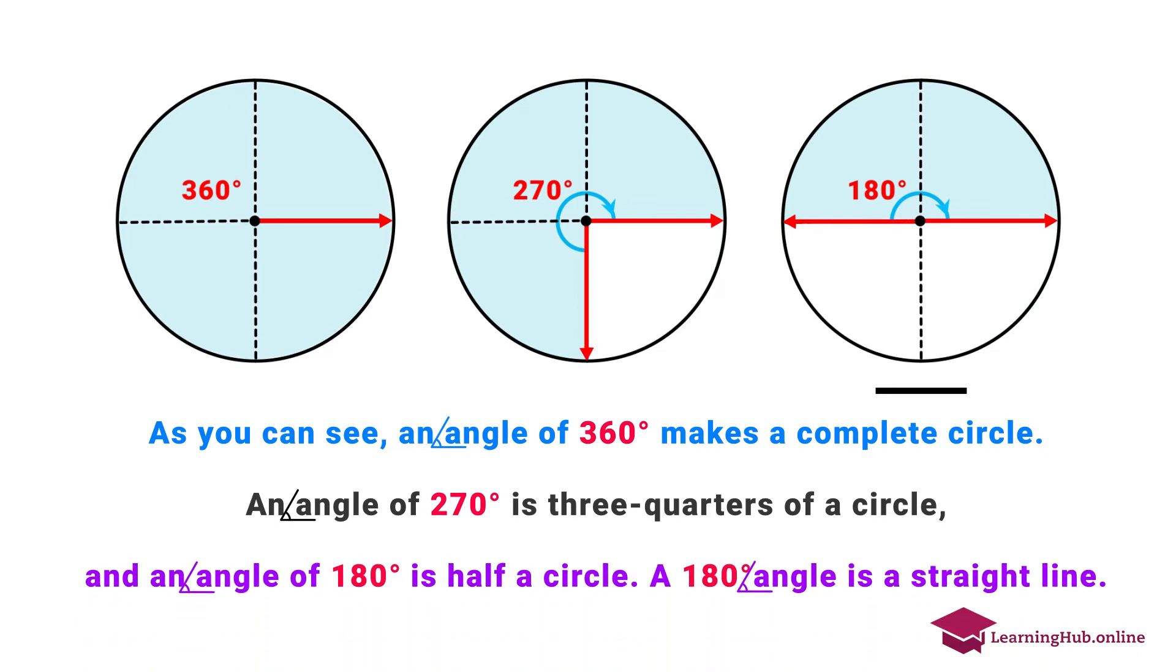And an angle of 180 degrees is half a circle. A 180 degree angle is a straight line.